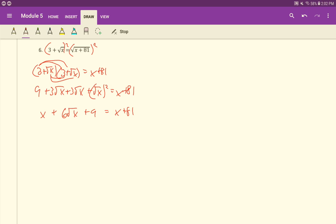Excuse me. I'm going to subtract 9 on both sides. Subtract x on both sides. And then we'll get, the x's will cancel. So we'll just have a 72 here and then 6 root x there. 72 divided by 6 on both sides here. We'll have root x equals 12. So squaring both sides, we get x equals 144.